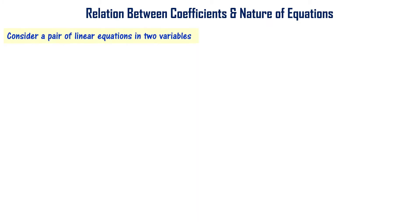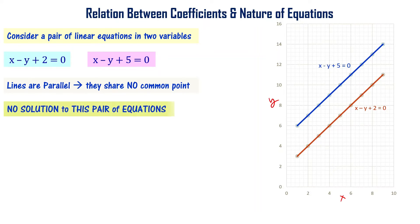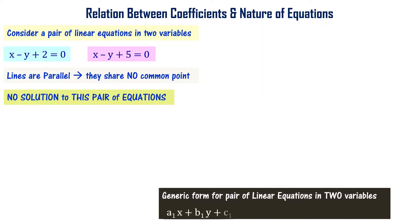Let's consider a pair of linear equations in two variables where the equations are parallel. They share no common point, so the equation has no solution.